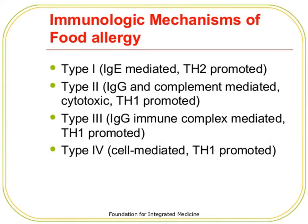Food allergy is essentially a hypersensitivity reaction, which is divided into four types: Type 1, Type 2, Type 3, and Type 4. Type 1 is IgE-mediated and TH2-promoted. Type 2 is IgG (Immunoglobulin G), complement-mediated cytotoxic, and TH1-promoted. Type 3 is IgG immune complex-mediated and TH1-promoted. Type 4 is cell-mediated and TH1-promoted. These are the four mechanisms that take place in food allergy.